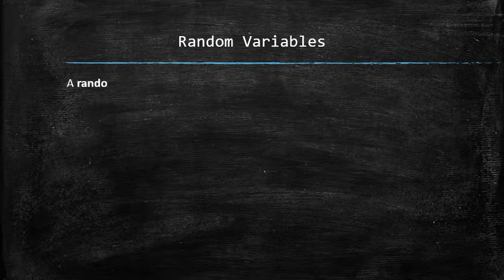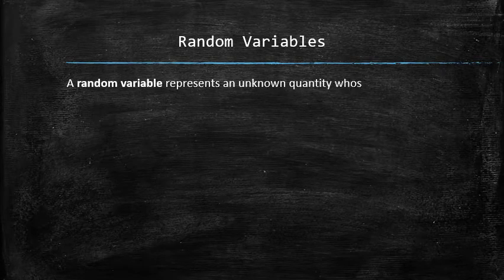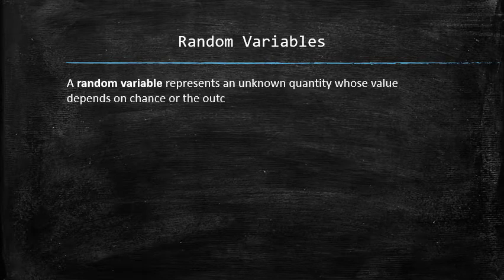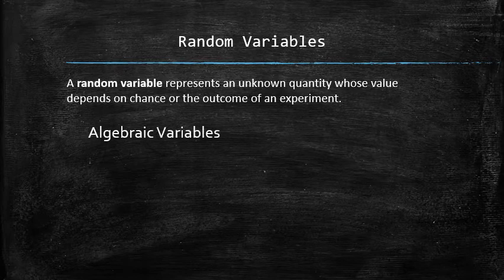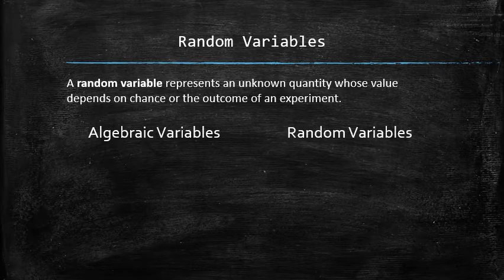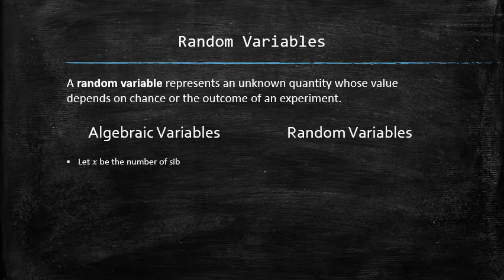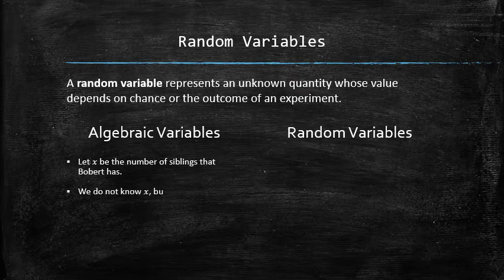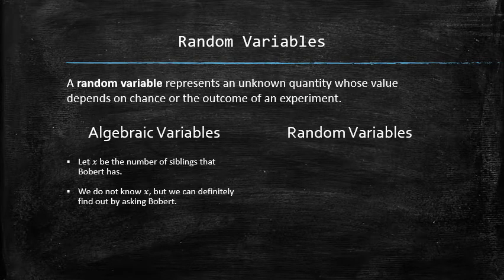In statistics, a random variable represents an unknown quantity whose value depends on chance or the outcome of an experiment. What is the difference between an algebraic variable and a random variable? In algebra, a variable represents an unknown quantity. For example, let x be the number of siblings that Bobert has. We do not know x, but we can definitely find out by asking Bobert or by setting up and solving an equation. Therefore, x is an example of an algebraic variable.